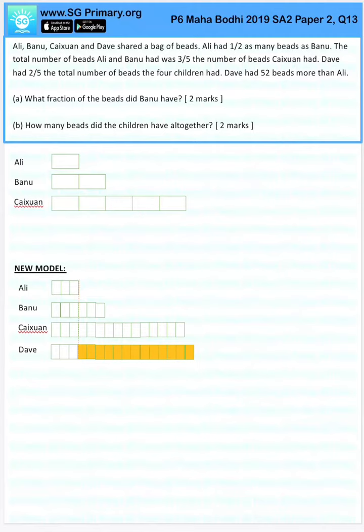Ali had half as many beads as Banu, so we've drawn it here - one unit and then two units here for Banu. The total number of beads Ali and Banu had was three out of five, three-fifths of the beads that Caixian had.